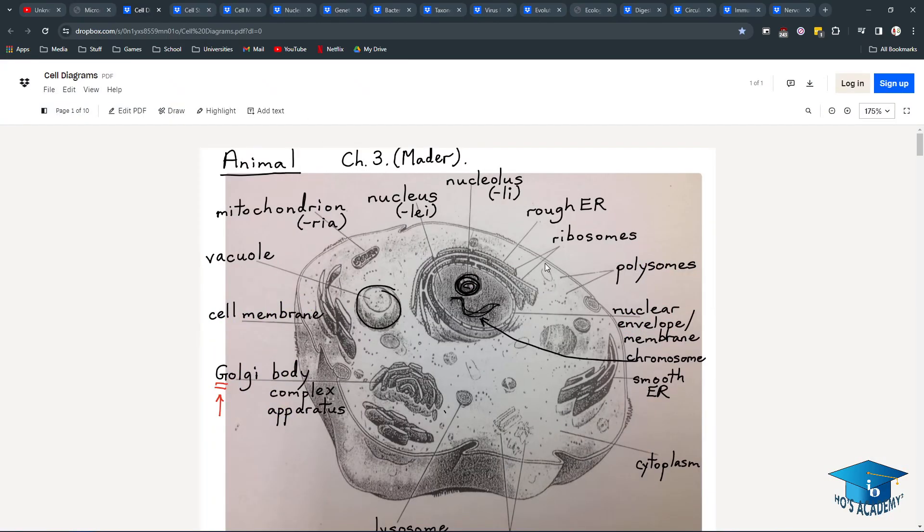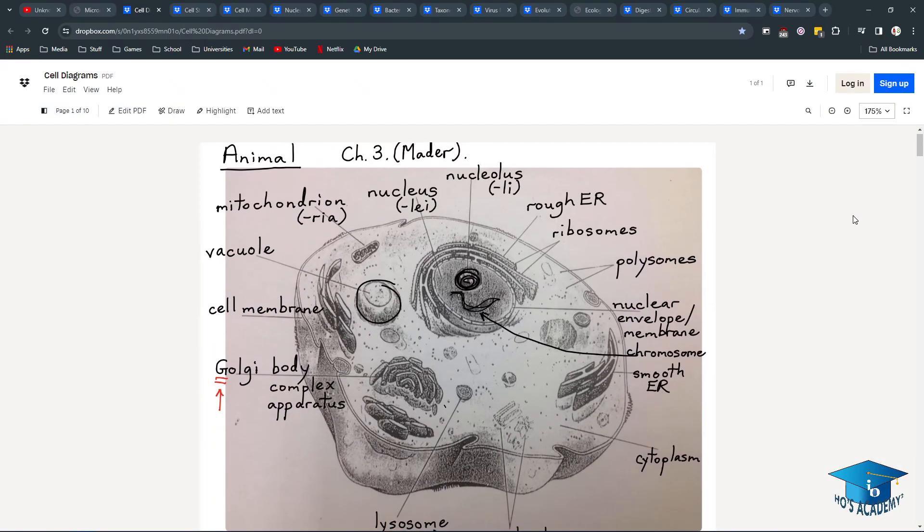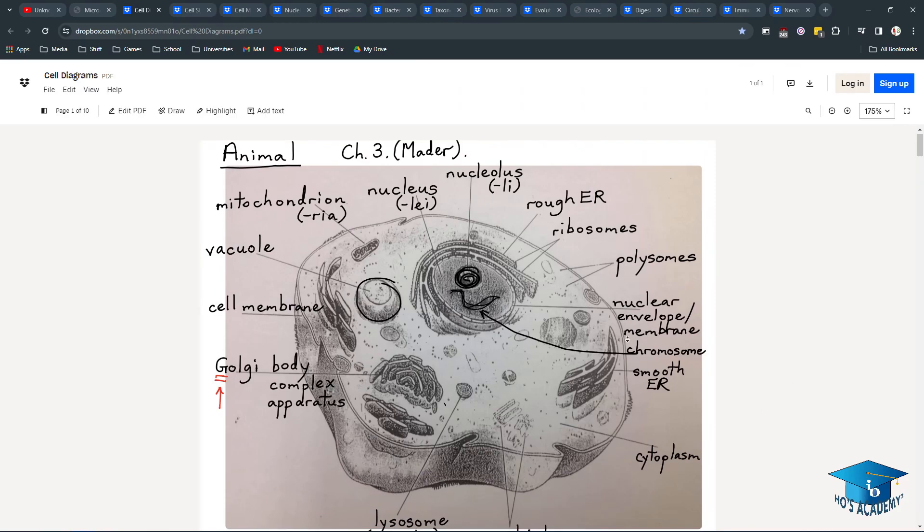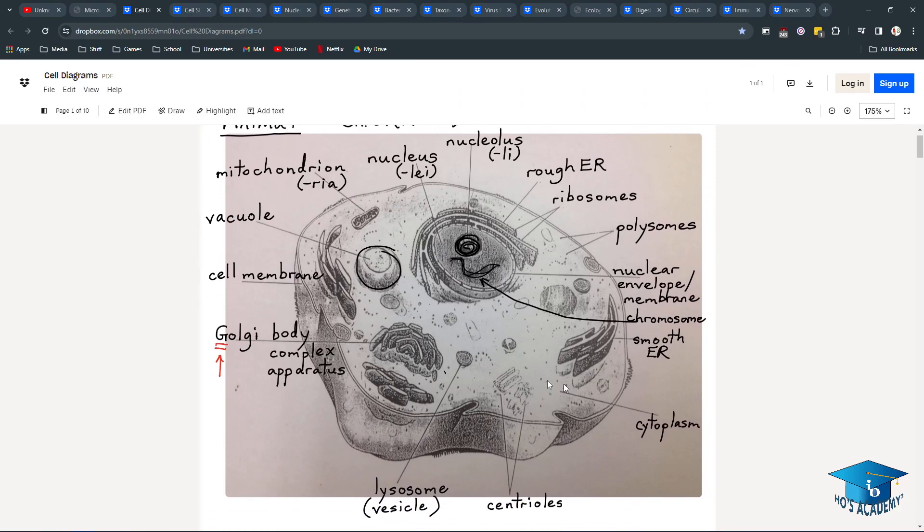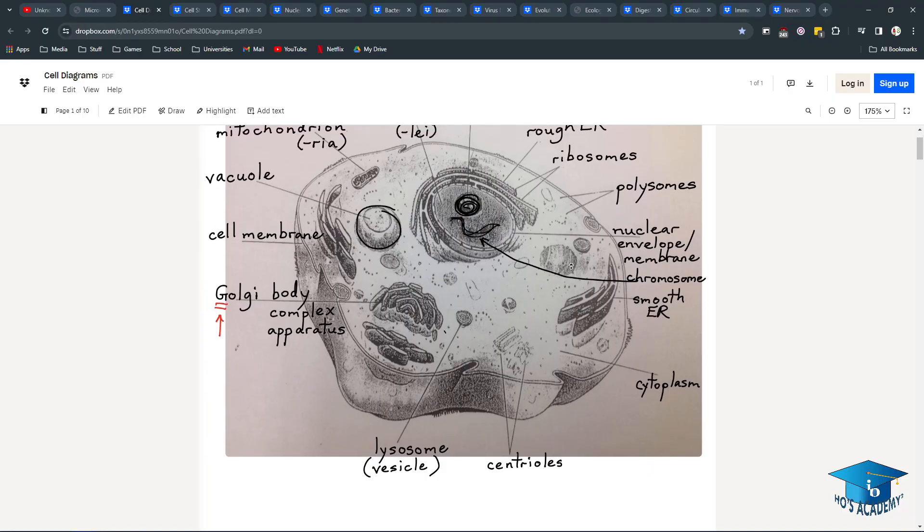So on to the actual stuff. Cell diagrams. This is an animal cell. All the parts are labeled here. You're going to have to be able to recognize the electron micrograph. Some of the harder ones to see are the rough ER and the Golgi apparatus. They look really similar. As well as vacuoles. They all look like black and white blobs. It's really annoying.